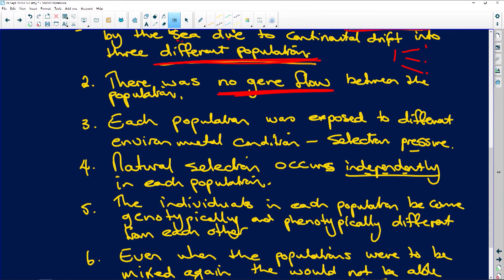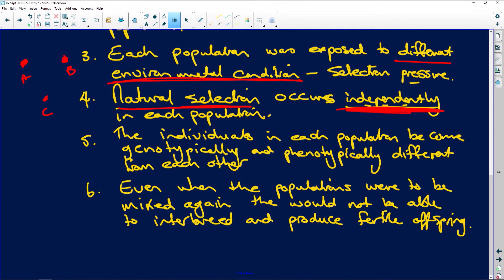Each population is exposed to different environmental conditions. Very important we talk about them being different because they're living in different areas. Then natural selection occurs independently. So this group have natural selection and that one. In this case, the three lots of camels there would be C - doesn't matter, but each one is in a different area, they each have different natural selection happening. Then the individuals in each population become genotypically - their genes - and phenotypically - physically - different from each other. This is the important thing: They don't look like each other and their genes are different. And it's because their genes are different that they are physically different.